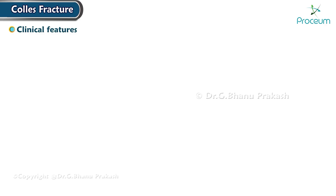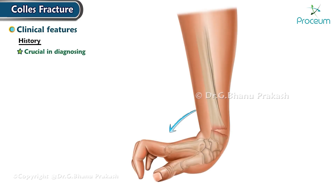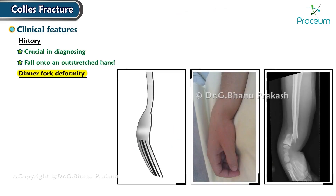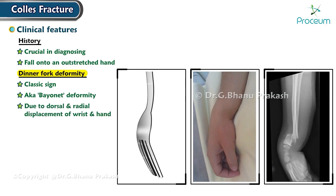A patient's history is crucial in diagnosing Collis fracture, with a typical account involving a fall onto an outstretched hand. One of the classic signs is the so-called dinner fork or bayonet deformity, due to the backward, dorsal, and outward radial displacement of the wrist and hand.